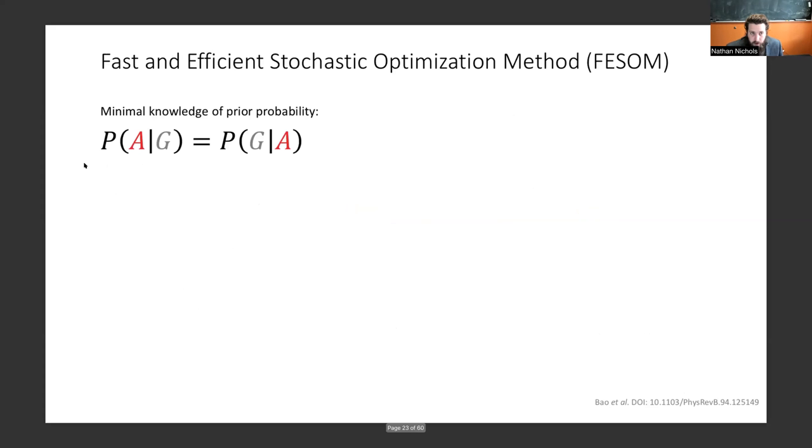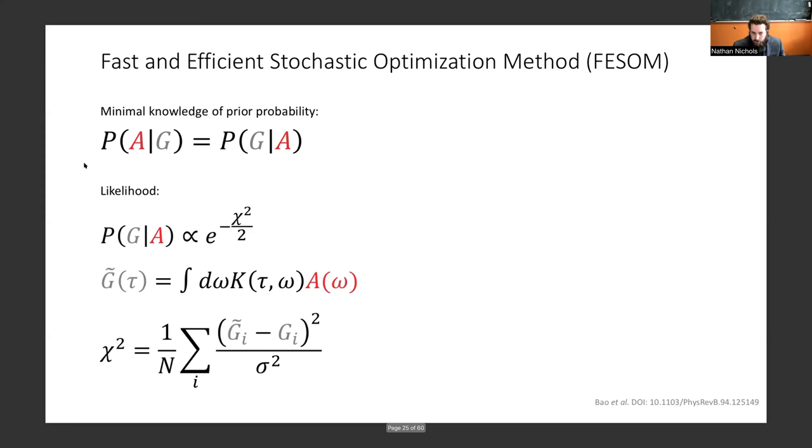On to the state-of-the-art. This is the so-called fast and efficient stochastic optimization method, FISOM, pioneered by Thomas Meyer's group. Their approach is they have basically no knowledge of the prior probability, so they're only maximizing the likelihood. It's the same likelihood that we saw before. I'm going to discuss a little bit about the algorithm itself.